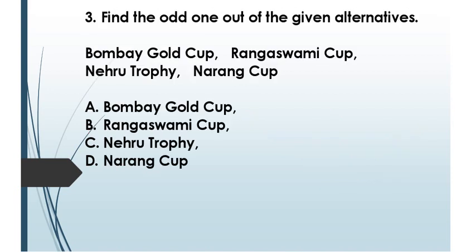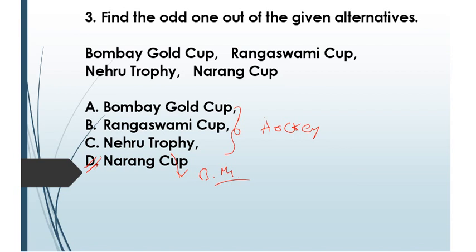Question three: find the odd one out — Bombay Cup, Rangaswami Cup, Nehru Trophy, Narang Cup. The first three belong to hockey, while Narang Cup belongs to badminton. Answer: option D, Narang Cup.